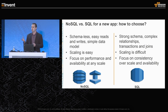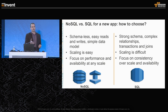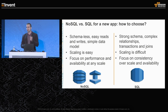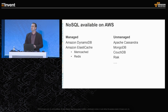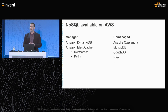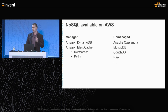NoSQL is not one database — it's a whole category of databases. The four main types are key-value stores, columnar stores, document stores, and graph stores. On AWS we have two managed services: DynamoDB, which is a key-value and document store, and ElastiCache, which is an in-memory key-value store. AWS is also an open platform, so you can install and run any technology you choose.